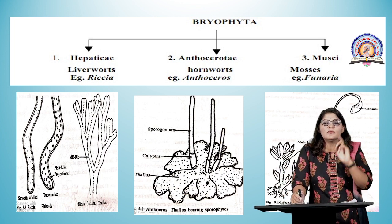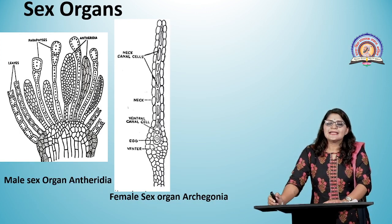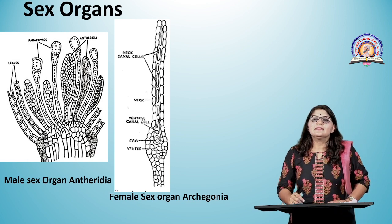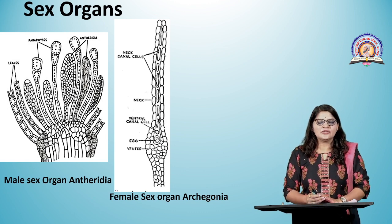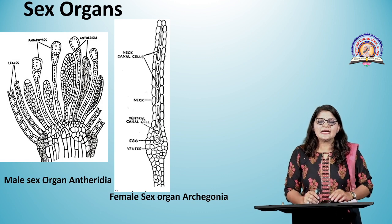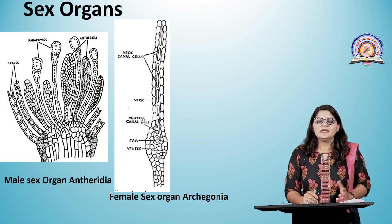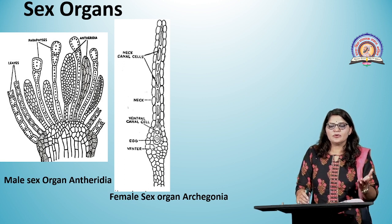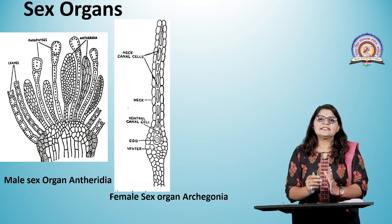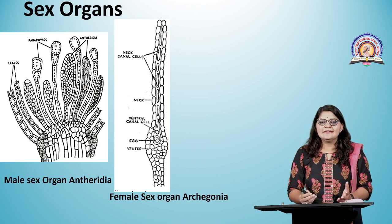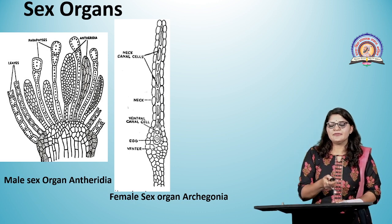Bryophyta is divided into three classes: Hepatici (liverworts, liver-like thallus, example: Riccia), Anthocerotae (hornworts, sporophyte looks like a horn, example: Anthoceros), and Musci (mosses, example: Funaria). The antheridium (male sex organ) is a globose body with a short multicellular stalk; anthrocytes undergo metamorphosis to produce spermatozoids. The archegonium (female sex organ) is a flask-shaped structure with a bulbous venter, elongated neck, and an egg situated centrally.